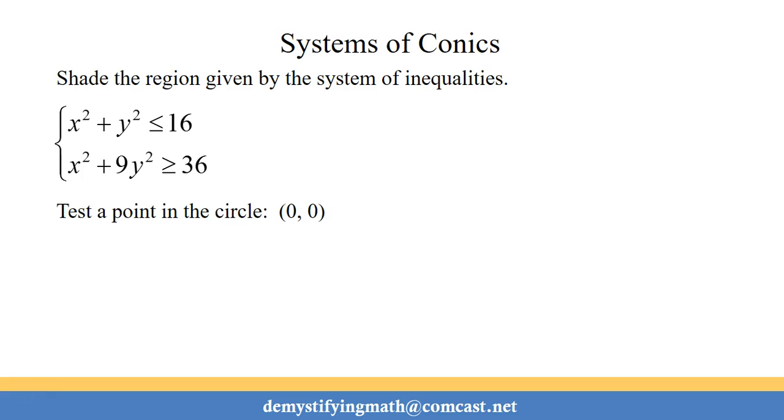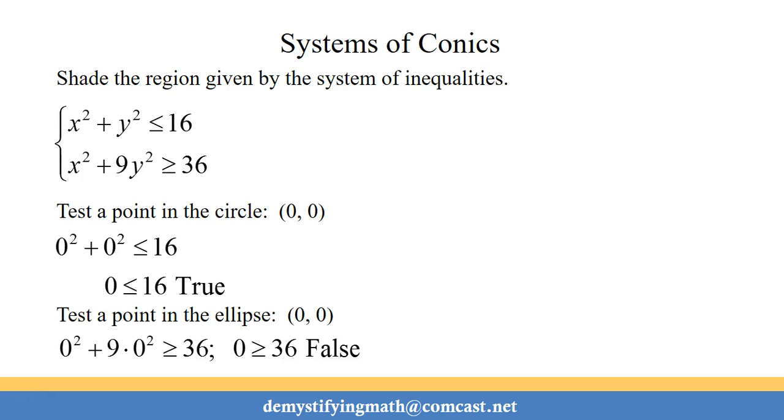So we're going to test (0, 0) into the circle first. So 0 ≤ 16 is a true statement, so that would indicate that we would be shading inside the circle. Then we're going to test the same point in the ellipse. And when we do, we get a false statement,